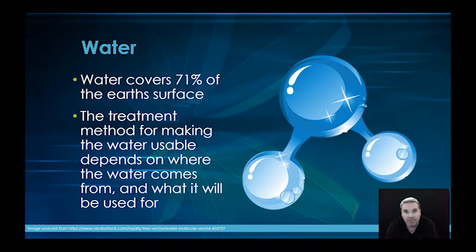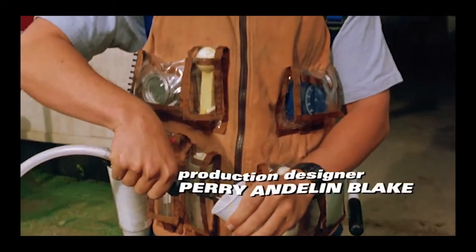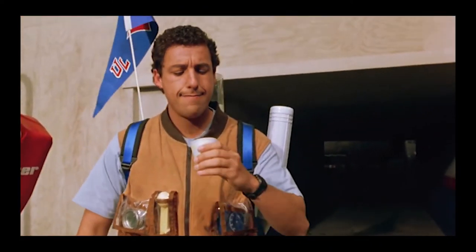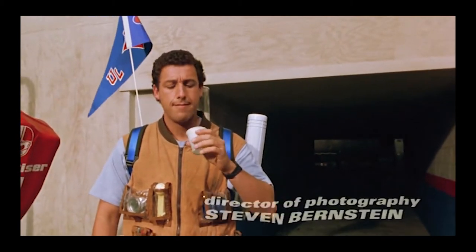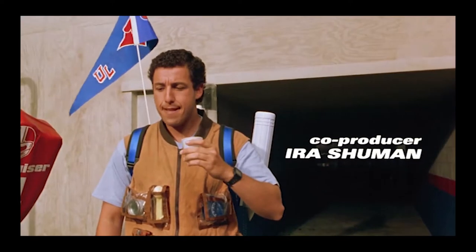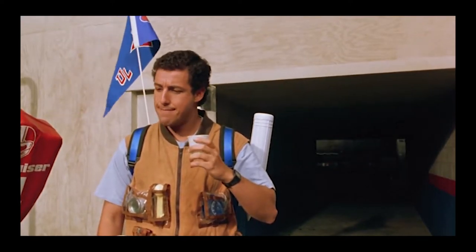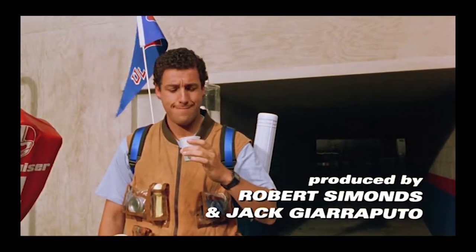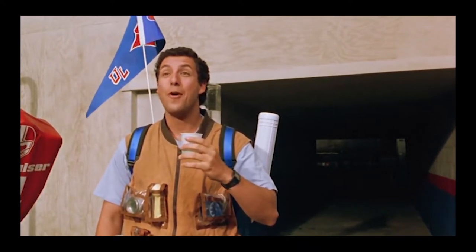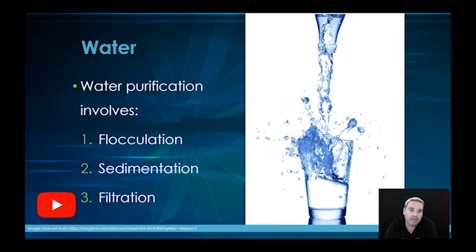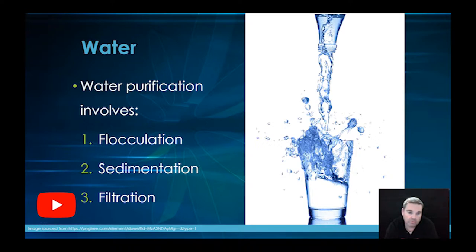You might have some questions around what good quality water is — well, here's the answer. So in order to get water that is clean, cold and crisp, we need to go through a couple of different chemical processes. The first one is what we call flocculation. I'm going to go through sedimentation and filtration as well.